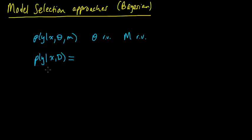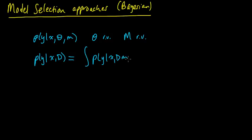What we're interested in is this predictive distribution on Y given X and our data. To compute this, we need to integrate out our model. So we have the integral of the probability of Y given X, the data, and the model, times the probability of the model given X and the data, integrating with respect to the model little m.